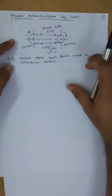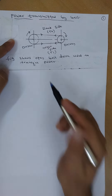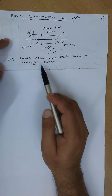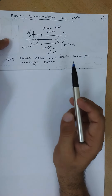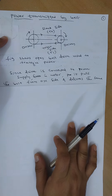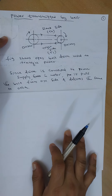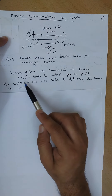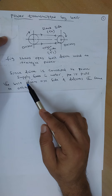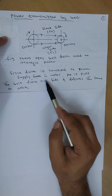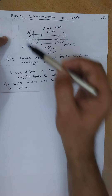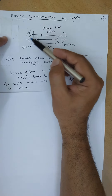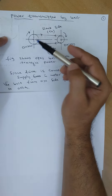As shown in the figure, this is an open belt drive used to transfer the power. Since the driver is connected to the power supply — that is the motor — we are connecting the motor to this driver pulley.